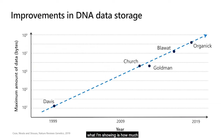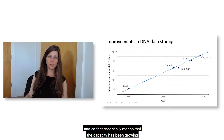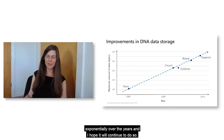Looking at the evolution of DNA storage, the capacity stored in DNA has been growing over time. The x-axis shows years, and the y-axis shows the amount of information stored — note that the y-axis is logarithmic. This essentially means that the capacity has been growing exponentially over the years, and I hope it will continue to do so.